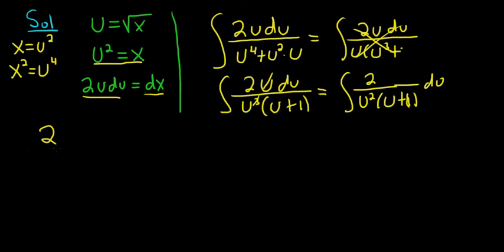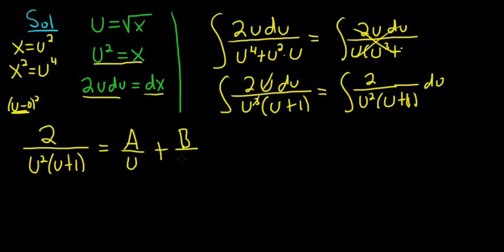Yeah, this is partial fractions time. So 2 over u squared, u plus 1. So u squared is actually a linear factor. It's repeated. So we write this as A over u. And since it appears again, we write B over u squared. And the last one would be C over u plus 1, just using partial fractions, setting everything up. Now when you use partial fractions, the next step is to clear the fractions. So we have to multiply both sides by u squared, parentheses, u plus 1. So on the left-hand side, everything cancels. So we get 2 equals,